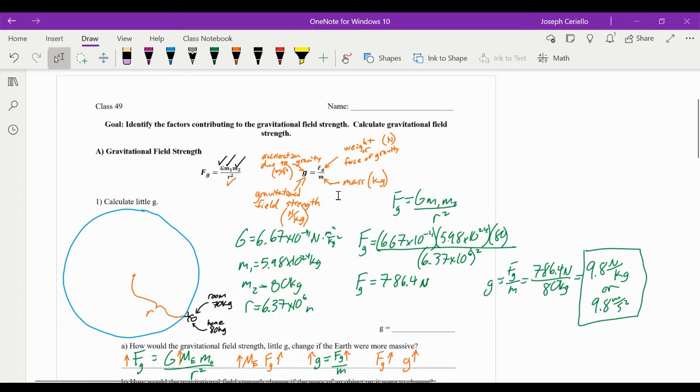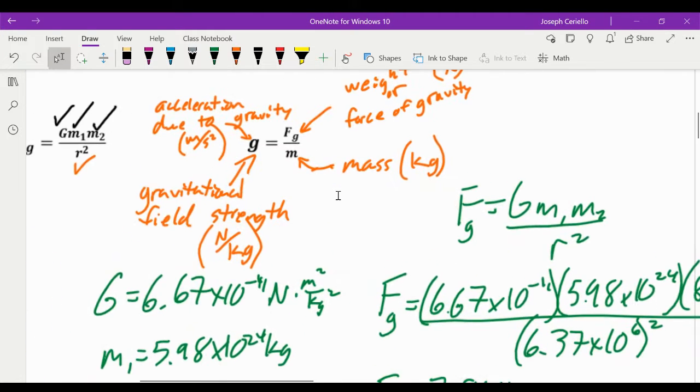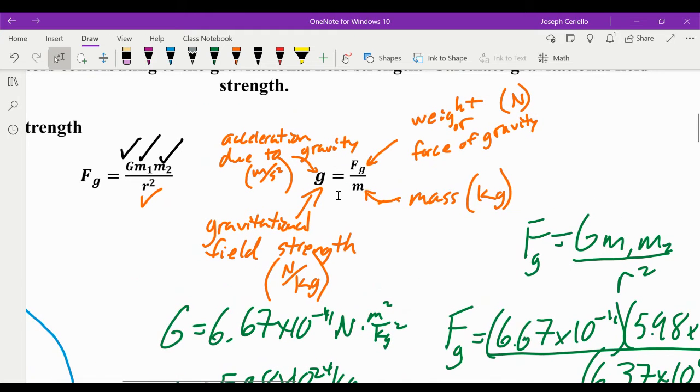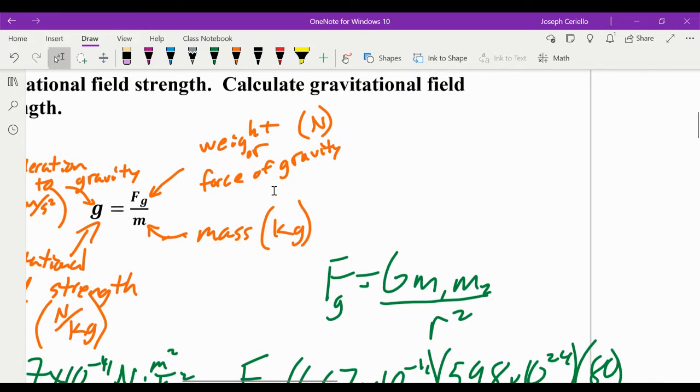Gravitational field strength is another word for little g. If we look at this equation here, g equals Fg over m, we've used this before for the acceleration due to gravity, where little g is the acceleration due to gravity in meters per second squared. Little g also represents gravitational field strength, which is measured in newtons per kilogram. Keep in mind that newtons per kilogram and meters per second squared are equal to each other.